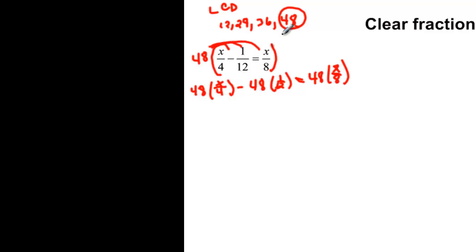So now we can reduce this. We can say that 4 goes into 48 12 times, so now we just have 12 times x. Then 12 goes into 48 4 times, so we have minus 4, equal to 8 goes into 48 6 times, so we have 6 times x.